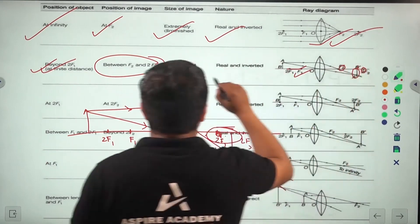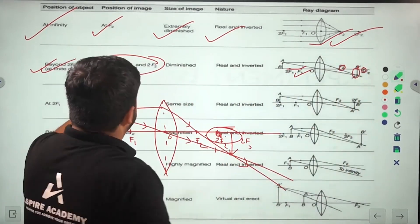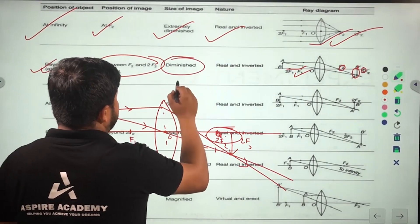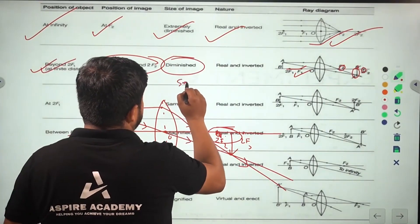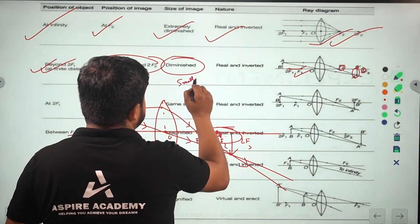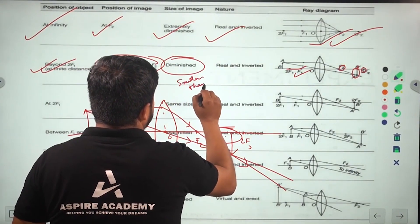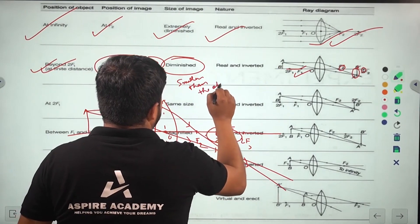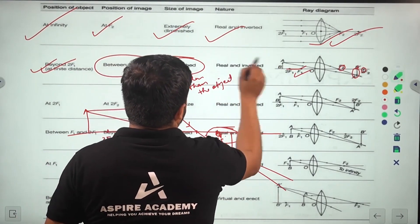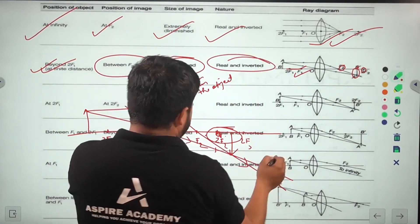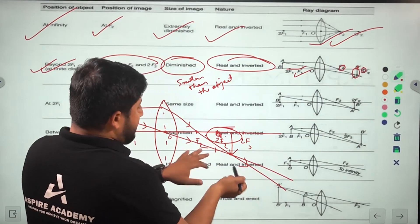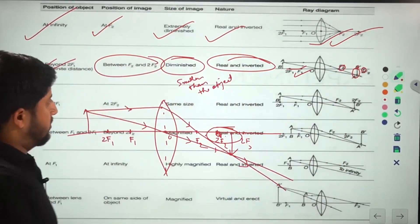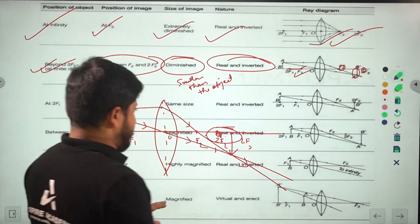When an object is placed between f2 and twice f2 in a convex lens, the image is diminished, meaning smaller than the object. The image is real and inverted. These are the conclusions for this case.